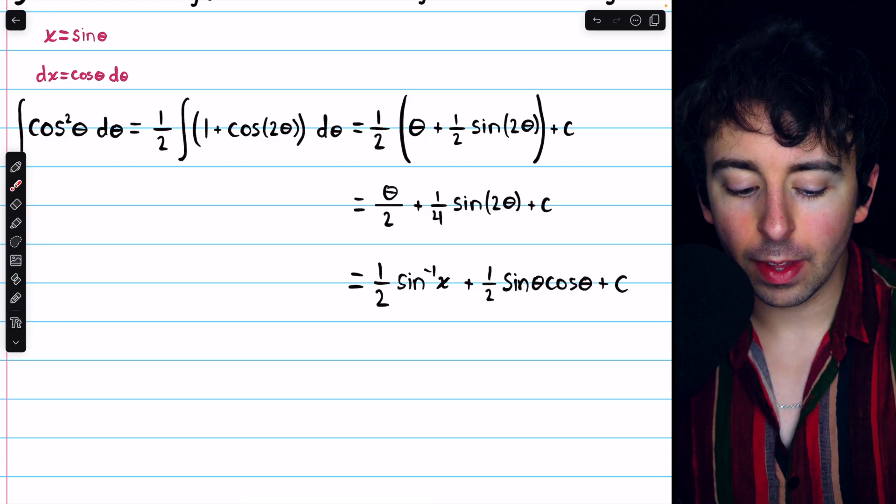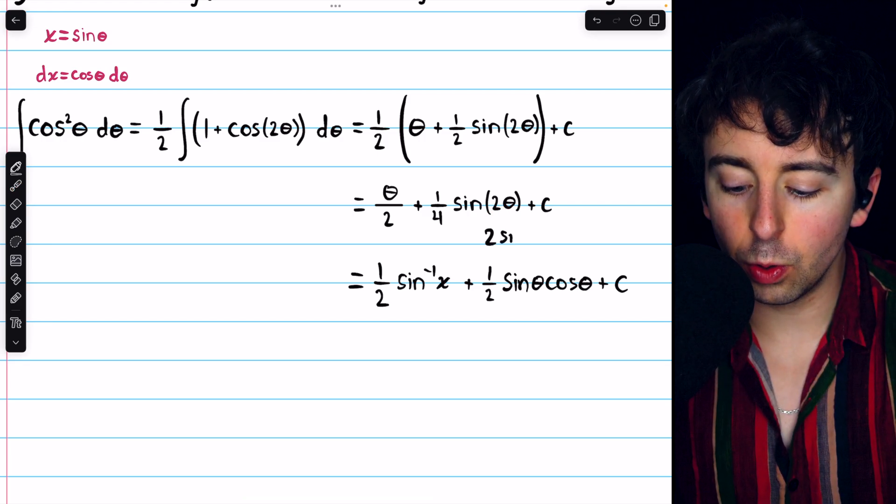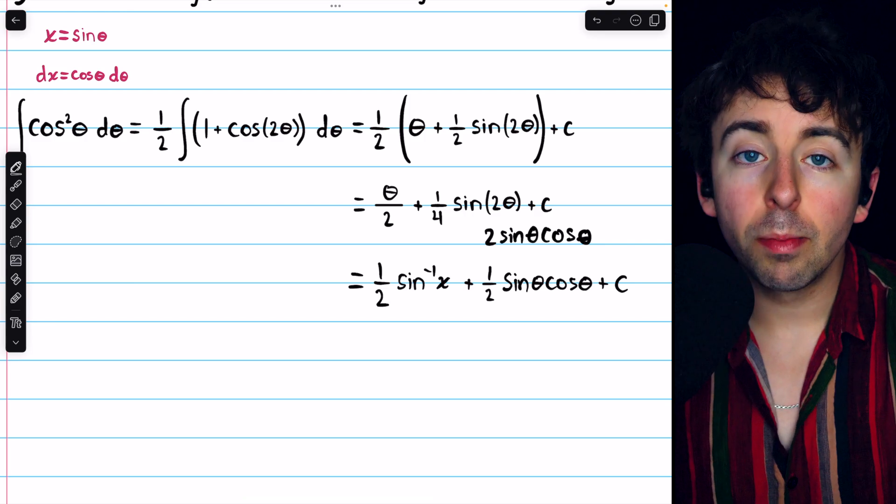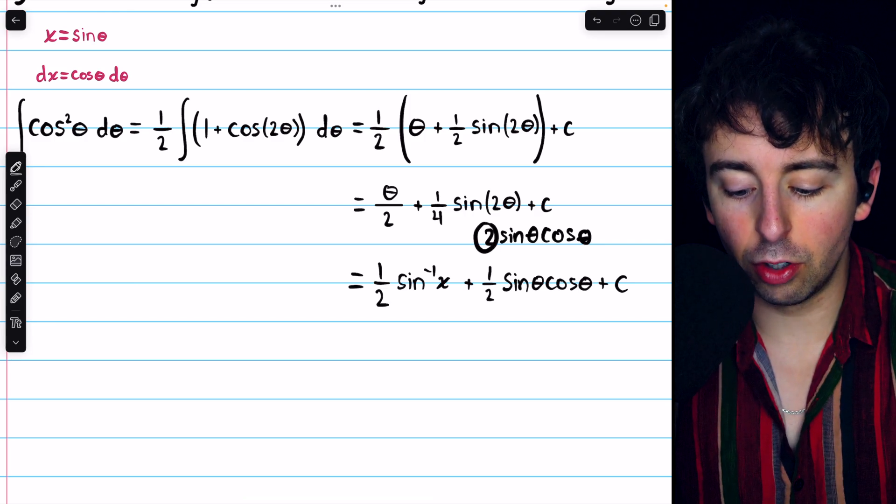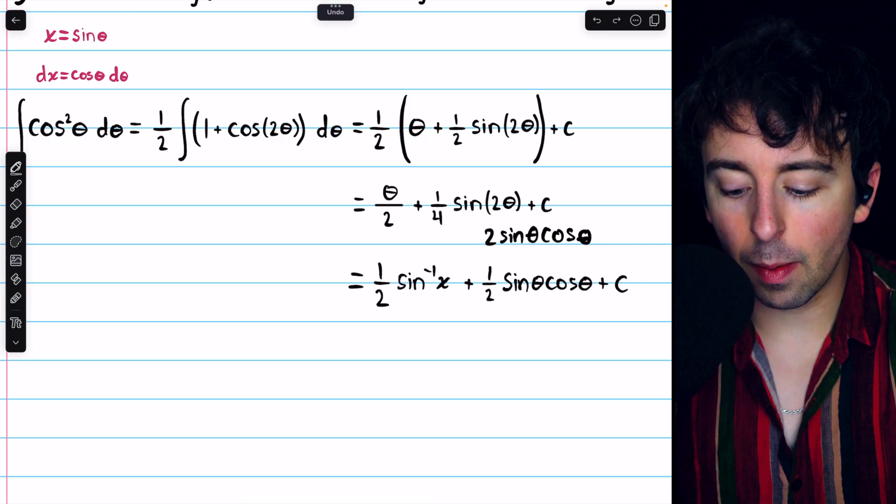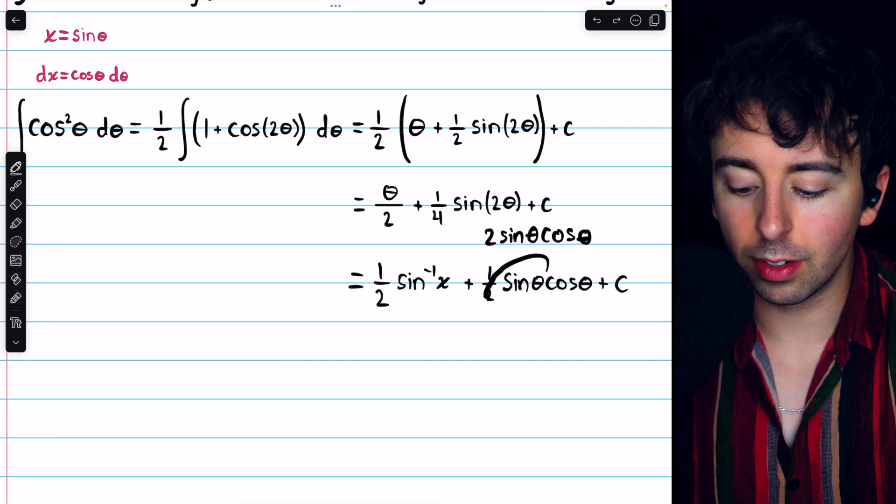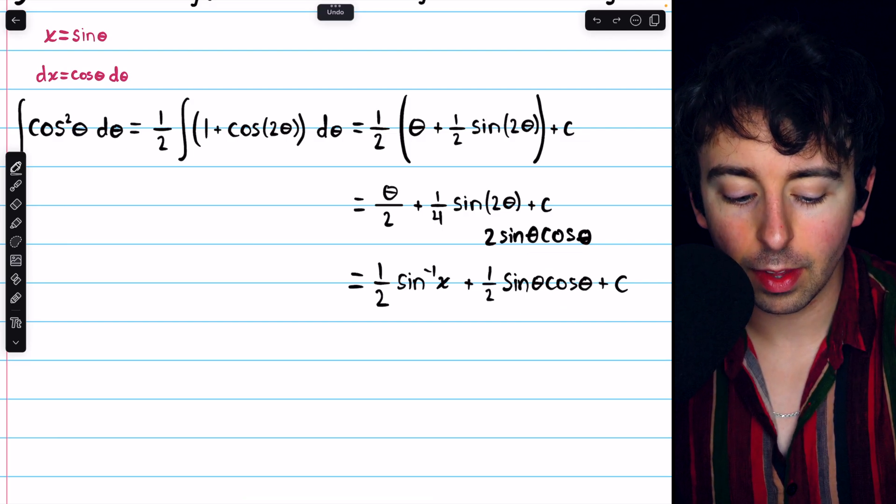Now, sine of 2 theta is the same as 2 sine theta cosine theta. By making that replacement, this 2 times a fourth becomes 1 half. And then, of course, we still have sine theta cosine theta.